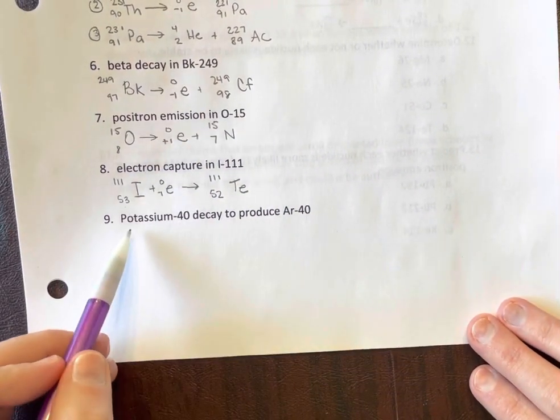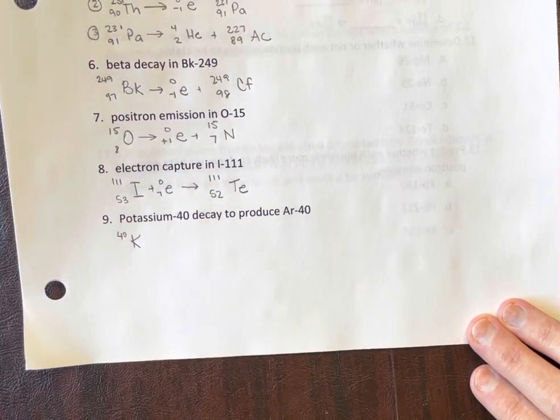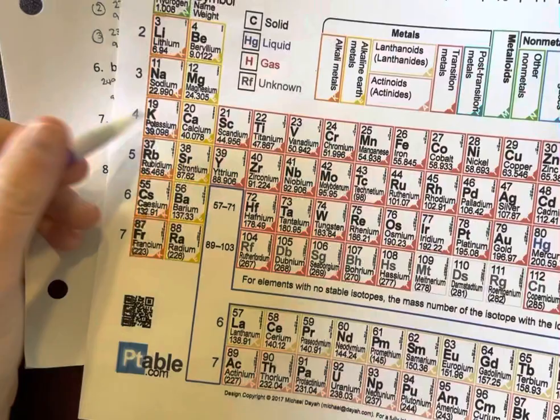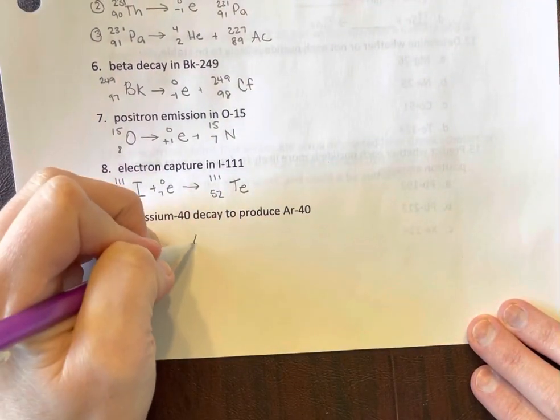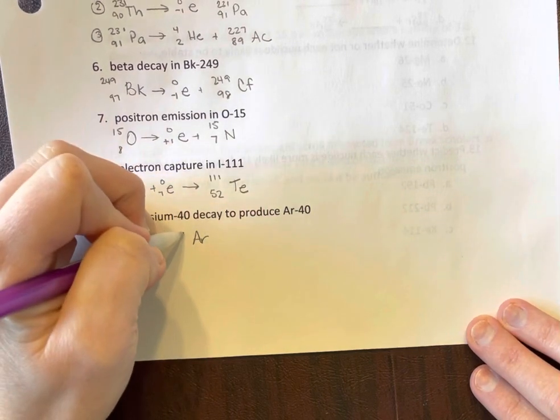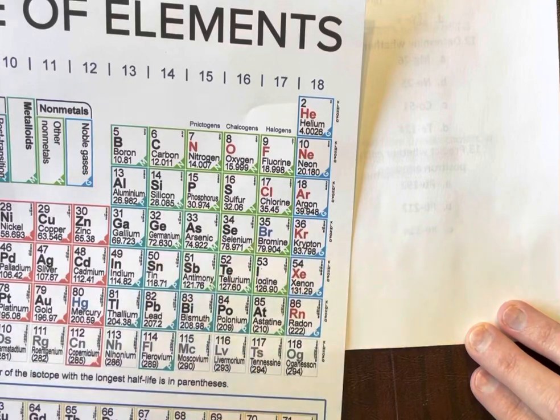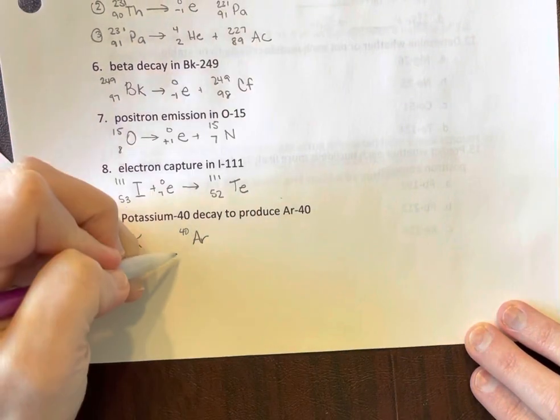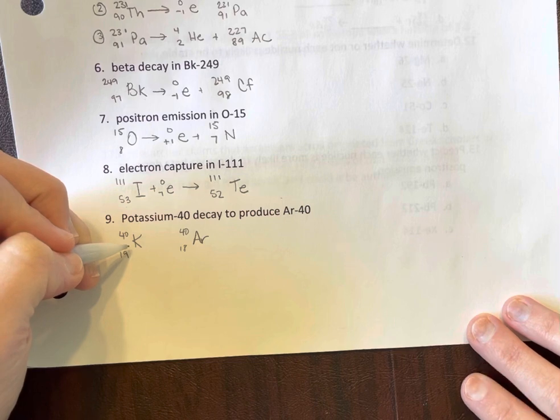Okay. Now this is interesting. We're going to start with potassium-40. And potassium is atomic number 19. Something's going to happen to it. And we're going to be producing argon-40. Argon is atomic number 18. Okay. So what needs to happen?